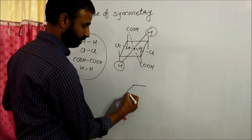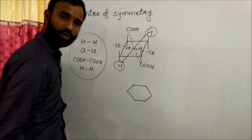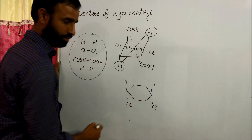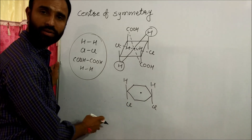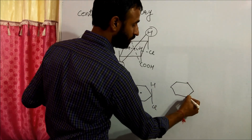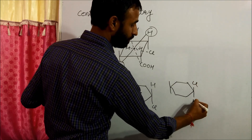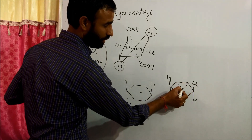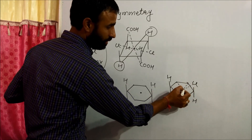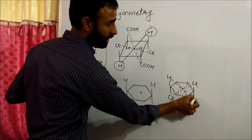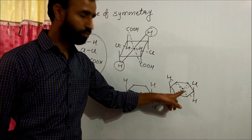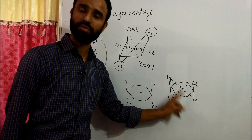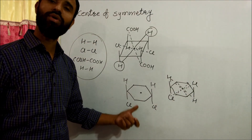One more example: consider a molecule like 1,2-dichlorocyclopropane. In the cis isomer, there is no center of symmetry. But when we draw its trans isomer, we can see that the carbons and substituents — Cl/Cl and H/H — are all symmetrical about a central point. Therefore, the trans molecule contains a center of symmetry and is optically inactive, while the cis molecule has no center of symmetry.